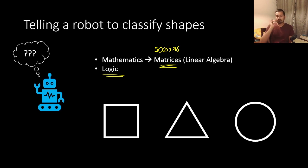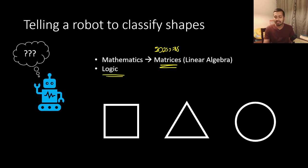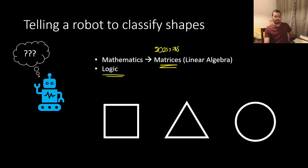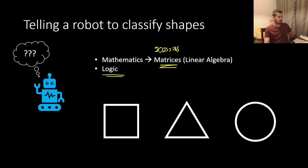So, I will try to learn machine learning. I will train and recognize the head. The head is square, triangle, and circle. So I will try to do it. It is an ideal case.